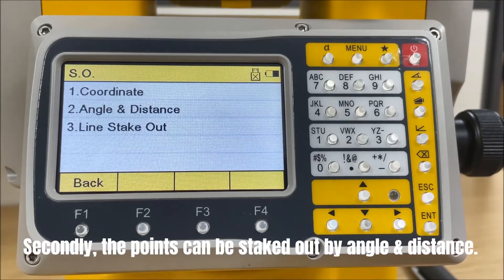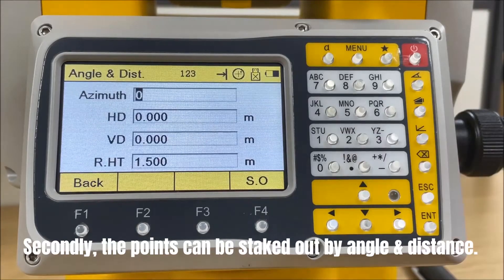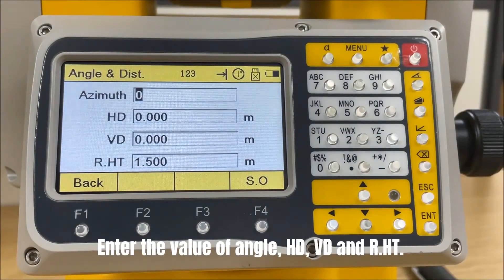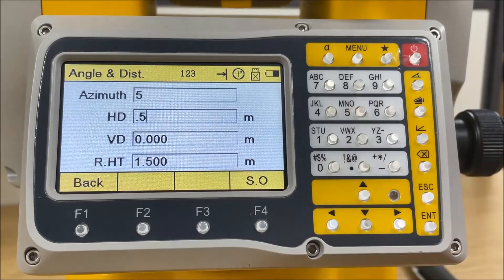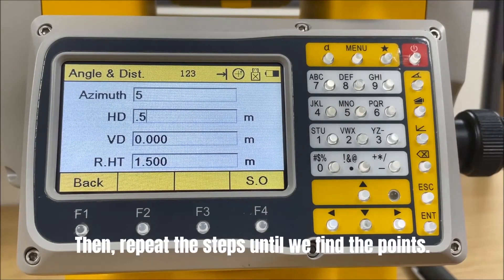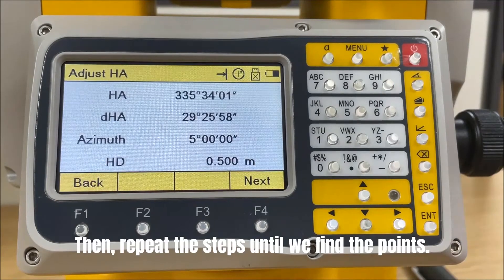Secondly, the points can be staked out by angle and distance. Enter the value of angle, horizontal distance, vertical distance, and reflector height. Then, repeat the steps until we find the points.